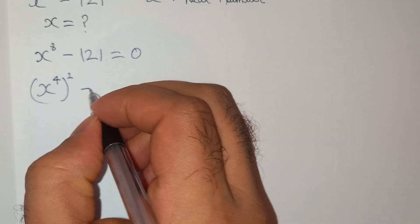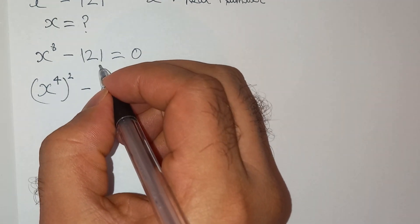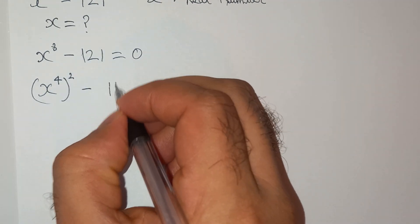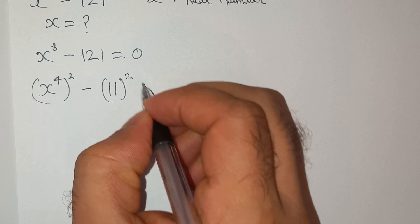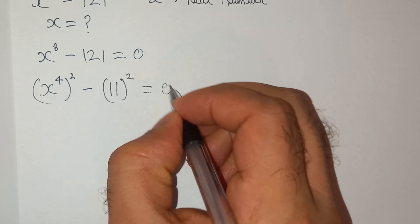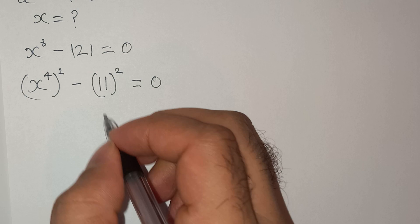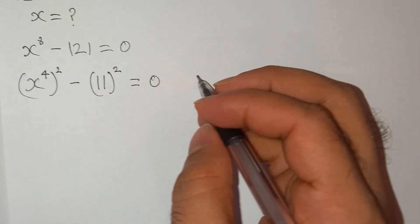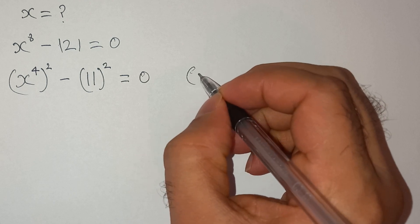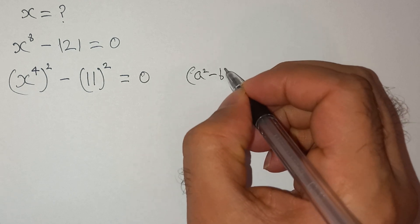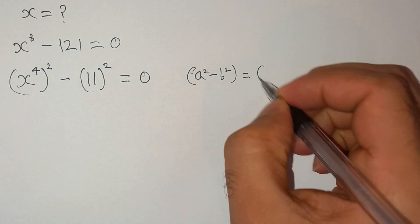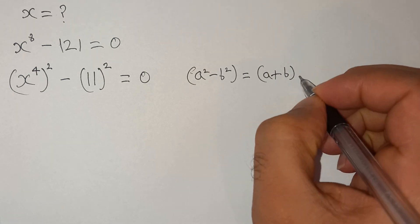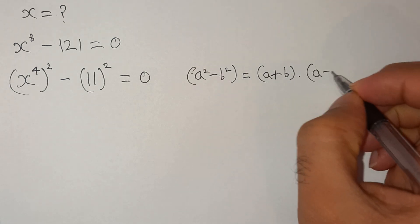Minus 121, which is the same as 11 square, equals to 0. Now you can see that this is a square minus b square formula, so a square minus b square equals to a plus b multiplied by a minus b.